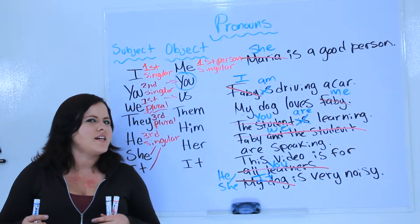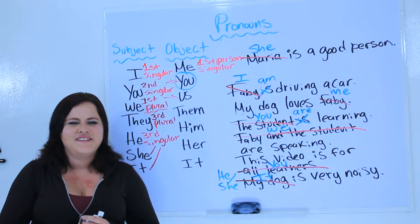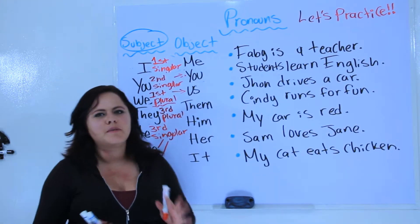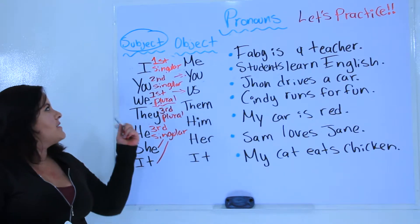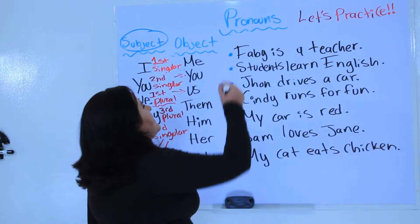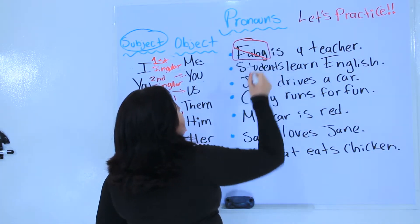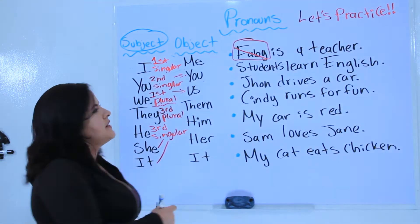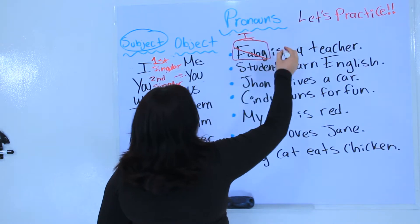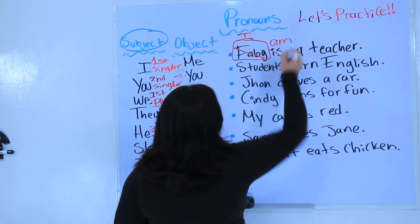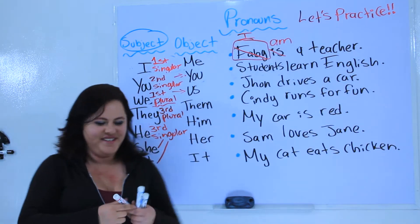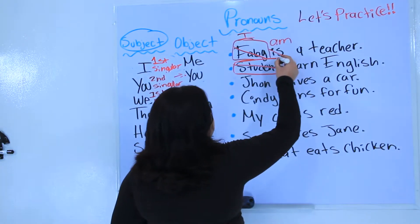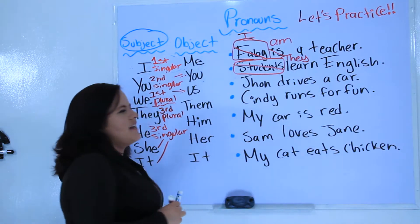Thank you for watching this part of the video. Let's go to the next part — it's practice time! So let's practice now. We have some sentences here written on the board so you can see how to use subject and object pronouns. For example, Fabi is a teacher — I don't have to use my name. I could use I. I am a teacher. And the second one is students learn English — we could simply say they. They learn English.